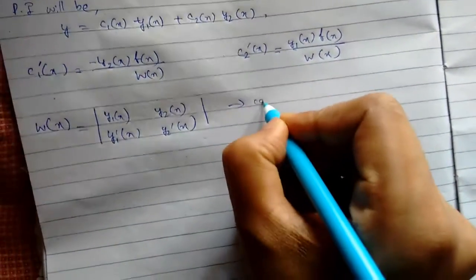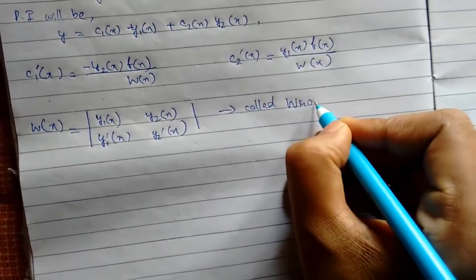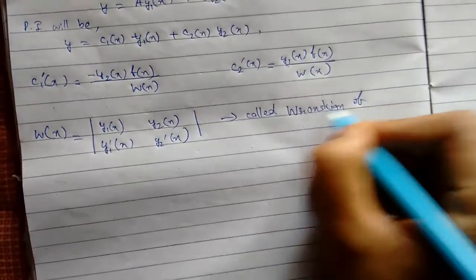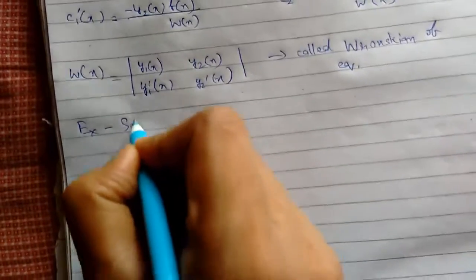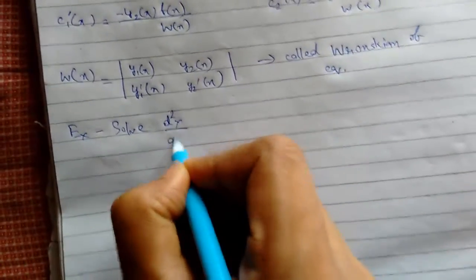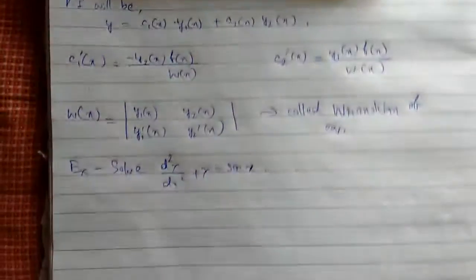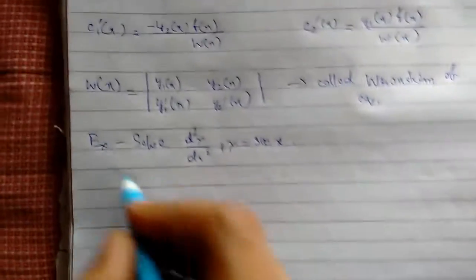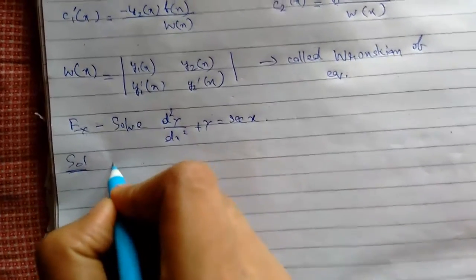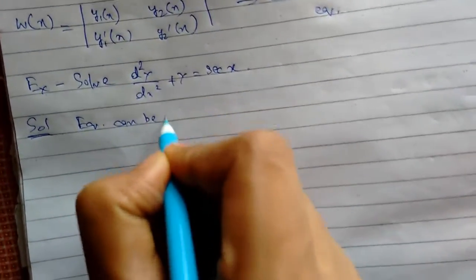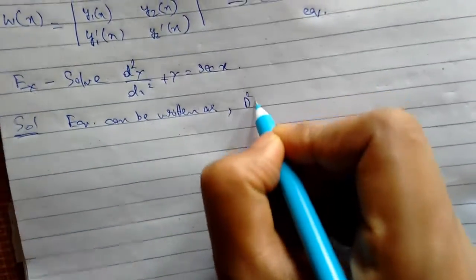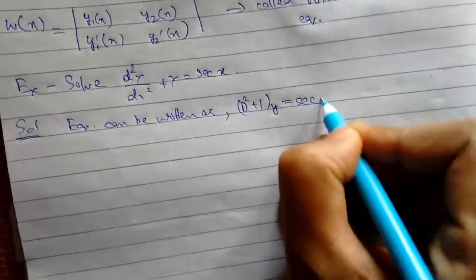This is called the Wronskian of the equation. To understand all this, let us see an example. We need to solve the differential equation d²Y/dx² + Y = sec(x). I had previously a question in the comments about what happens when there is a term like sec(x) other than sin and cos — we will use this method to solve it.